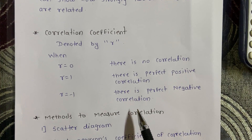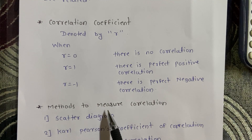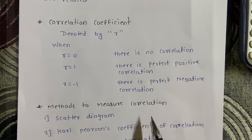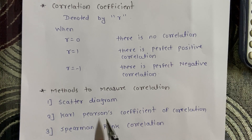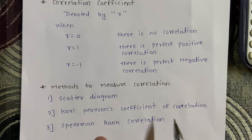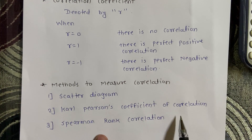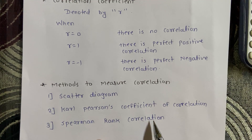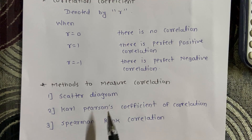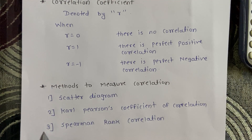There are different methods to measure correlation. The first is scatter diagram, the second is Karl Pearson coefficient of correlation, and the third is Spearman Rank Correlation. In this video we are going to study Spearman Rank Correlation.